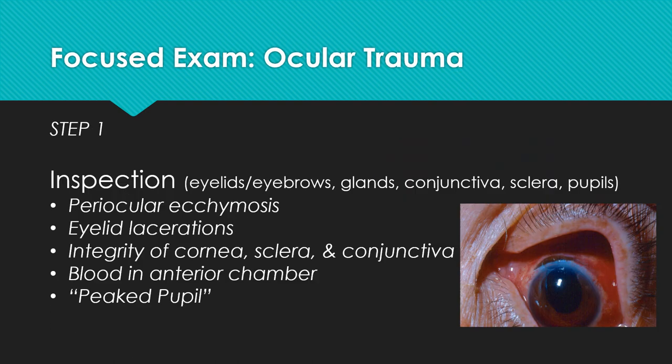After completing the focused history and past ocular history, one can begin the exam of the eye. The first step of any exam is inspection, and one should have a methodical approach for inspecting all eye structures, including the eyelids and eyebrows, the glands around the eye, the conjunctiva, the sclera, and the pupils. Some things to look for include any bruising or lacerations of the eyelid, confirming the integrity of the cornea, sclera, and conjunctiva, looking for any blood in the anterior chamber, and looking for a peaked pupil.